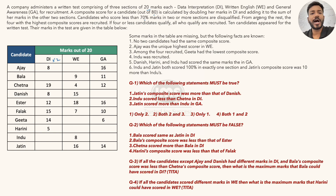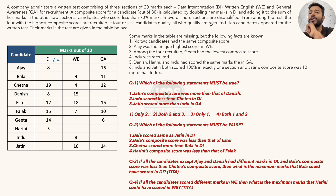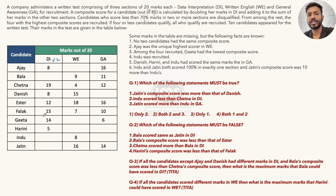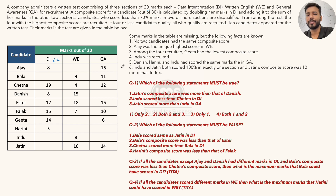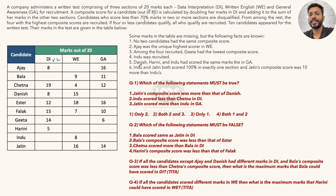From among the remaining candidates, the 4 with the highest composite scores are recruited. So after disqualification, the top 4 scorers will be selected. There are 10 candidates: Ajay, Bala, Chetna, Danish, Esther, Falak, Gita, Harini, Indu, and Jatin. Some marks in the table are missing, and additional facts are given. We'll first calculate composite scores for candidates where full data is available, then read the statements.